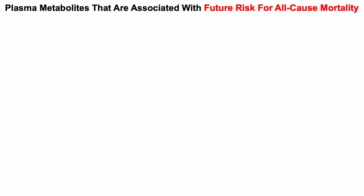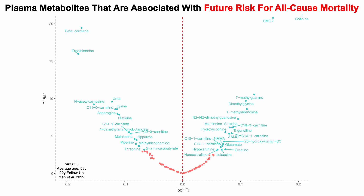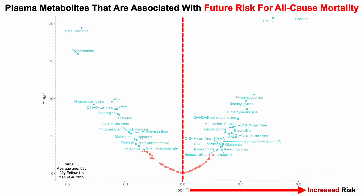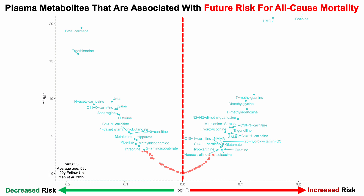Let's start today's video by taking a look at plasma metabolites that are associated with future risk for all-cause mortality. Putting up a line at a hazard ratio of zero, to the right of that line would be metabolites associated with an increased risk for all-cause mortality — higher levels of the metabolite are associated with a higher risk. To the left of that line would be higher levels of metabolites associated with a reduced or decreased risk for all-cause mortality.